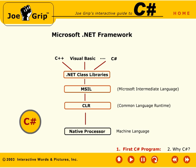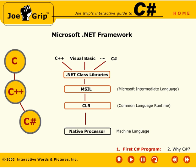Central to the .NET strategy is the C# language. Although .NET by its very design supports a wide variety of languages, C# will have the most prominent place among the supported languages. Designed from the ground up, C# inherits many of the features available in its predecessors C and C++, but also adds many of the strict object-oriented features found in Java.